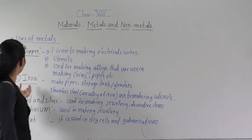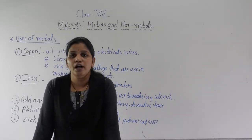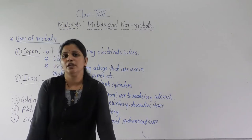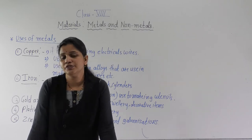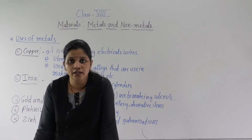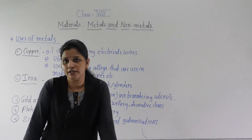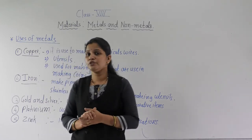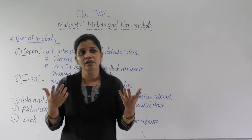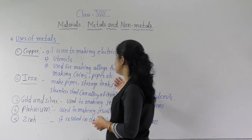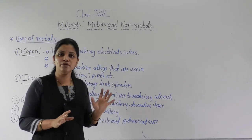Now the second metal we will see is iron. Iron is also most important — most of the things in your surroundings are made up of iron. Just observe your room and you will find many things made of iron. Iron is very hard, and because of that we use it to make grains. Doors and safety doors are also made up of iron. Common uses of iron include making piles, storage tanks, and cylinders.